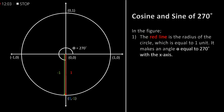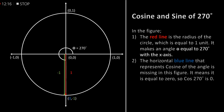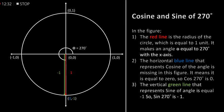Cosine and sine of 270 degrees. In the figure, the red line is the radius of the circle which is equal to 1 unit. It makes an angle theta equal to 270 degrees with the x-axis. The horizontal blue line that represents cosine of the angle is missing in this figure — it means it is equal to 0 — so cos of 270 degrees is equal to 0. The vertical green line that represents sine of the angle is equal to minus 1, so sin of 270 degrees is equal to minus 1.